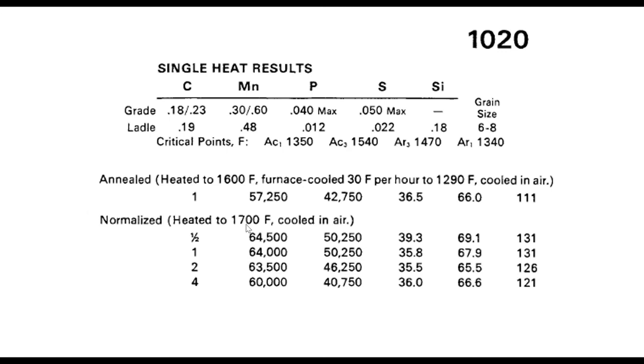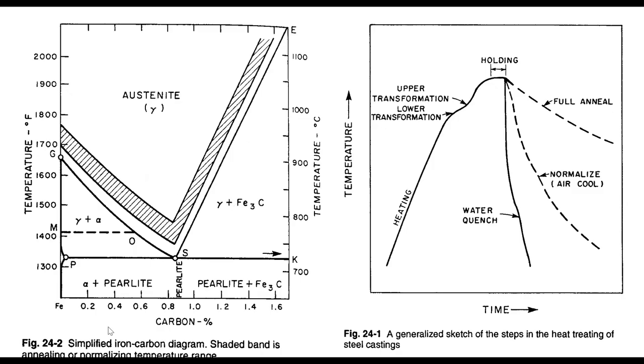Normalizing means I get it up to about the same temperature, 1,700 degrees, and then I just cool it off in air. This is a picture of that. If I go up to 1,600, I'm above this line, so I'm completely austenitic. I dissolve all the carbon. And then when I come down, depending on how rapidly I cool down, I get different structures.